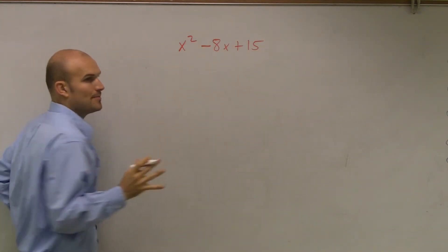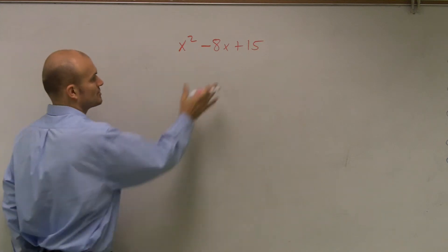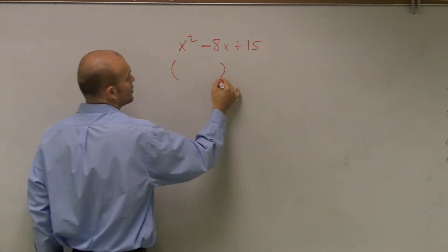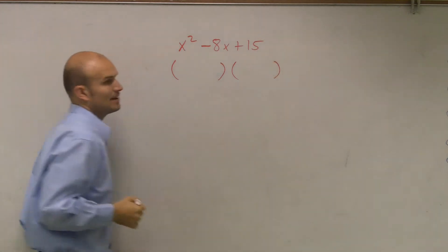So again, remember, when we're trying to factor, we're trying to undo our multiplication. We're trying to set this into two different binomials multiplied by each other.